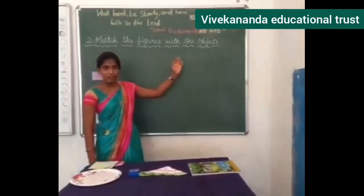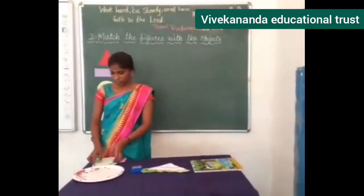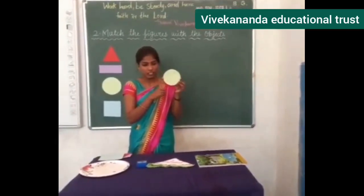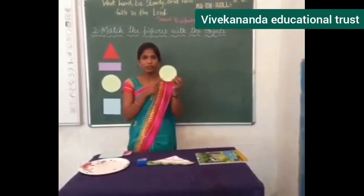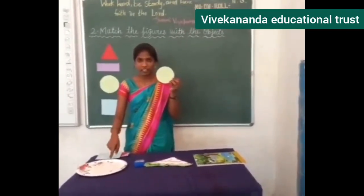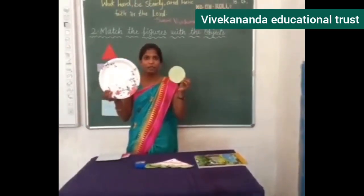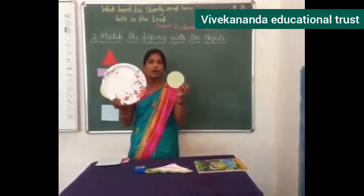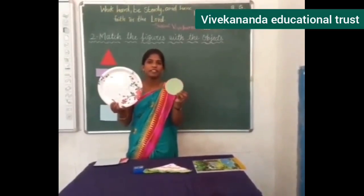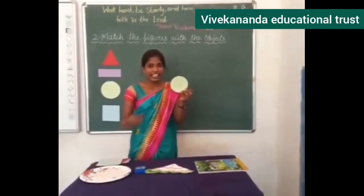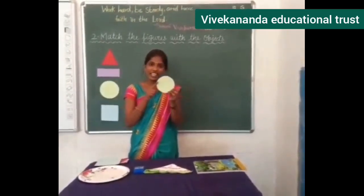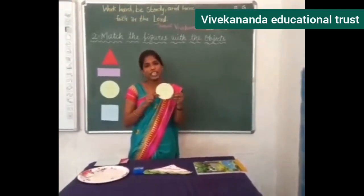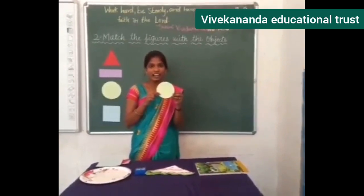We are going to match the figures with the objects. What shape is this? Circle. Which of the objects will match to the circle? A plate — plate is matched to the circle. Other than this, what objects do you know in circle shape? You eat idli — it is in circle shape. Dosa is also in circle shape. Puri, chapati — all these are in circle shape.